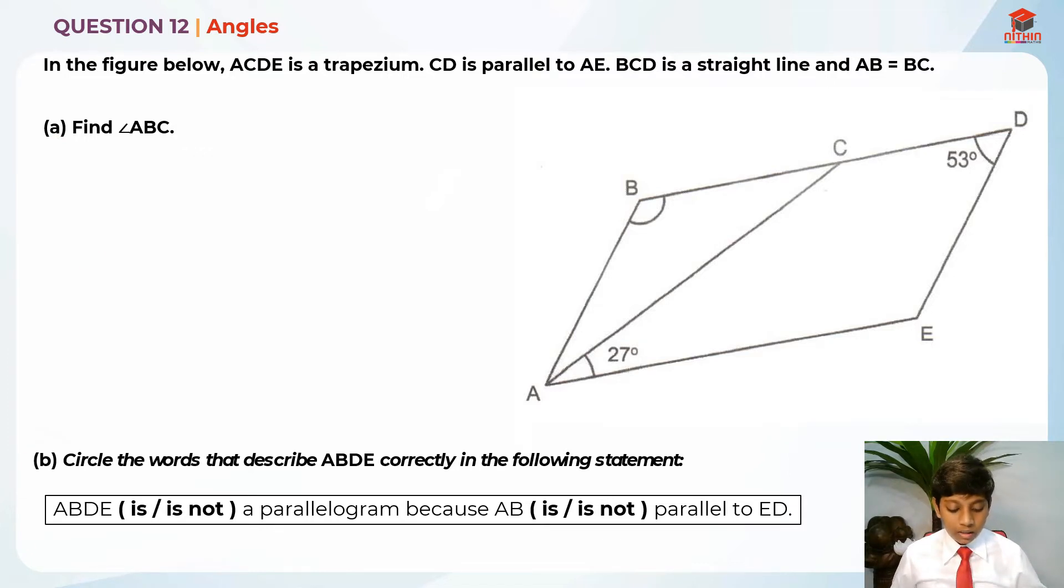Now that we have read the question, let's target the key information. So ACDE is a trapezium, CD is parallel to AE, BCD is a straight line and AB equals to BC. So let's analyze this figure.